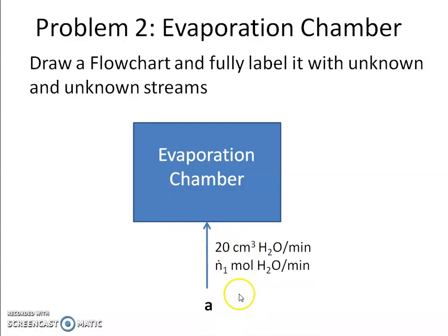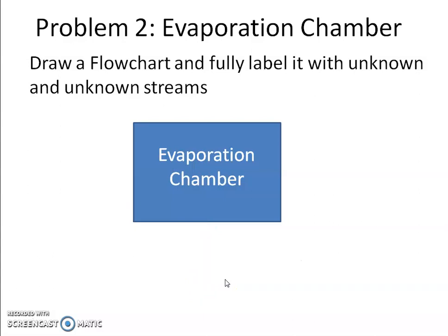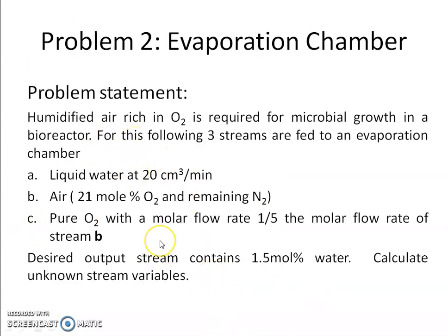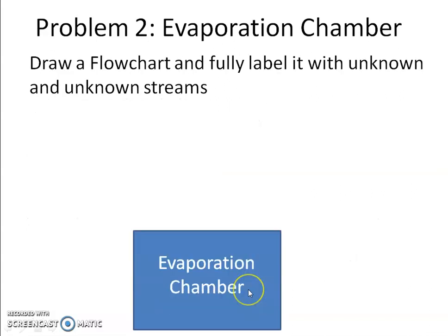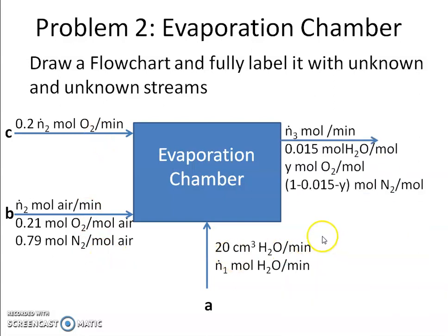Draw a fully labeled flowchart with all known and unknown streams. I have made a box representing the evaporation chamber. Stream A is liquid water, stream B is air, and stream C is oxygen. Since the problem is given in moles, I will use molar flow rates. Unknown n-dot-1 is the molar flow rate of water entering; n-dot-2 is the molar flow rate of air; and since oxygen is one-fifth of air, its flow rate is 0.2·n-dot-2.